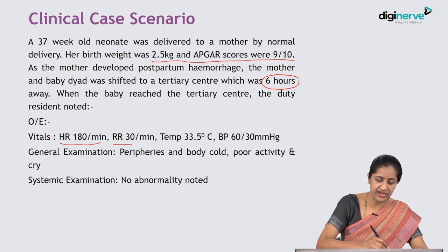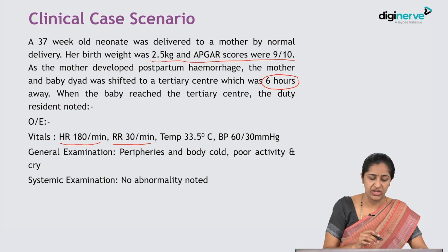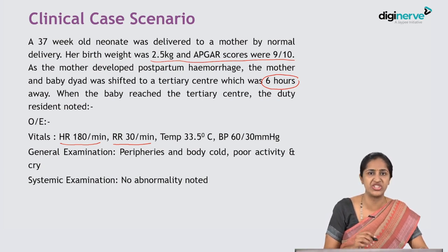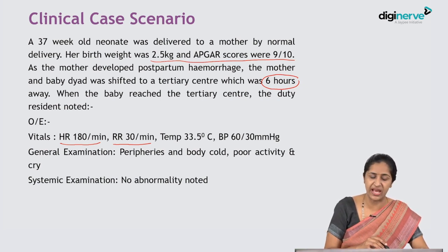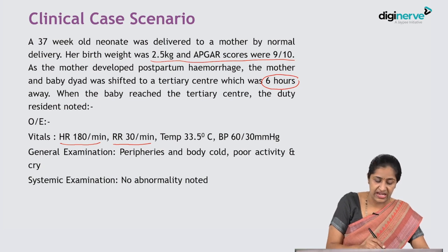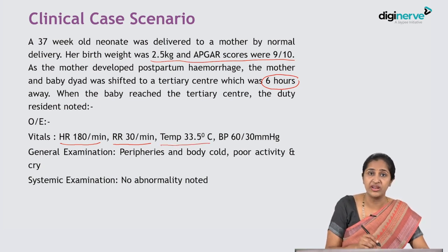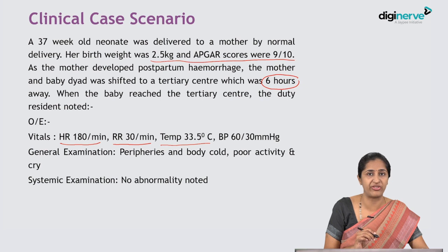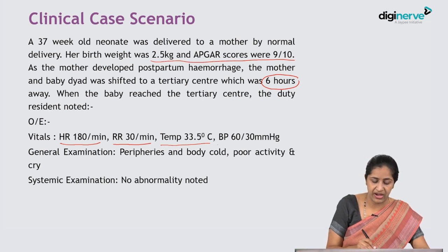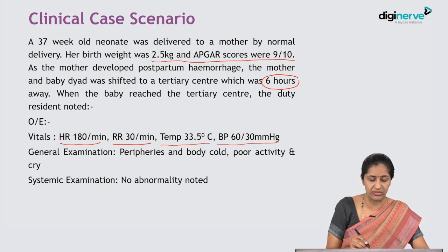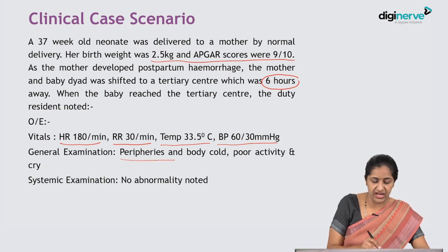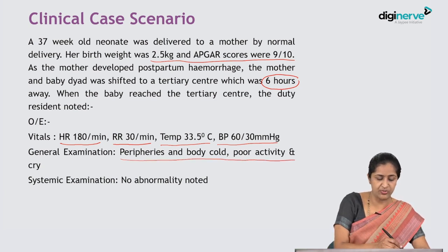The respiratory rate is strangely low. Normal respiratory rate is between 40 and 50 in a newborn just delivered, but here the respiratory rate is 30 per minute — something very slow and shallow is happening. The temperature shows the child is cold with a body temperature of 33.5 degrees Celsius. Blood pressure is on the lower limit of normal, and the child's peripheries and body are cold; she is poorly active with a poor cry.